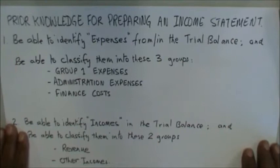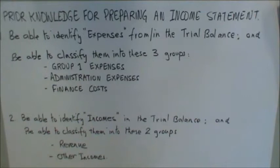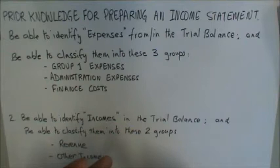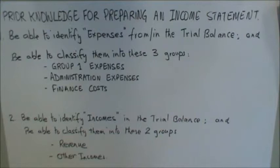Before making the income statement, some prior knowledge is needed. We need to know the two categories of income — revenue and other income — and the three categories of expenses — Group 1, administration expenses, and finance costs. Once we have a format in mind, we need to look at the trial balance, because that's where all the information will be given to us.